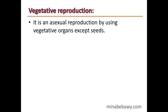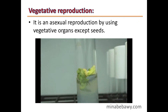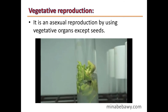Vegetative reproduction is an asexual reproduction using vegetative organs except seeds. It occurs without seeds, using plant vegetative organs such as leaves, roots, and stems to produce new plants identical to the parent plant. It can also occur by plant cell and tissue culturing — the plant grows quickly to form a complete plant without any seeds.